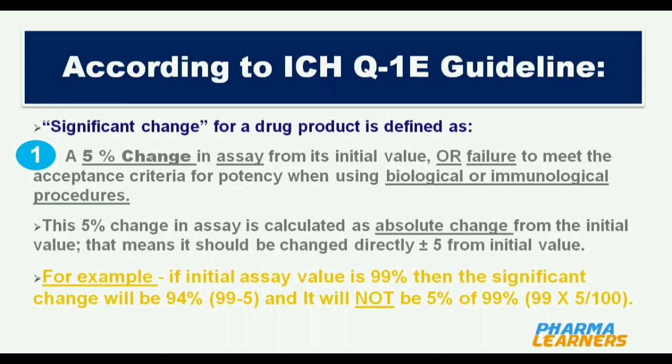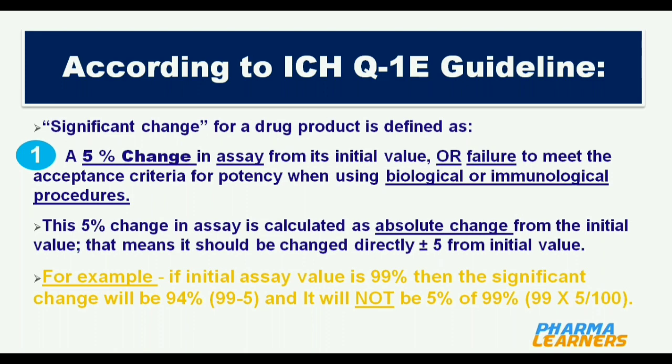According to ICH Q1E guideline, significant change for a drug product is defined as: first, a 5% change in assay from its initial value, or failure to meet the acceptance criteria for potency when using biological or immunological procedures. Please remember this 5% change in assay is calculated as an absolute change from the initial value.